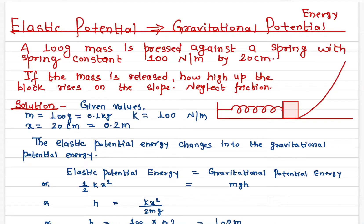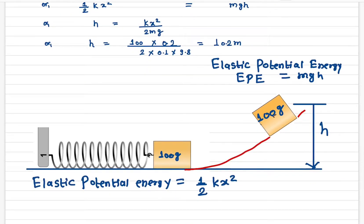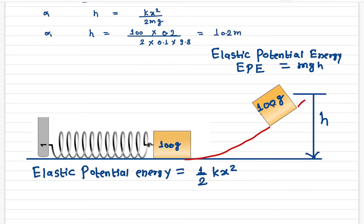In this problem I'll talk about the conservation of energy from elastic potential energy to gravitational potential energy. We have a spring-mass system here — a mass is connected to a spring, and this spring is compressed. When the mass is released, it will move because it is compressed against the spring, and it will start sliding down.